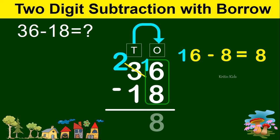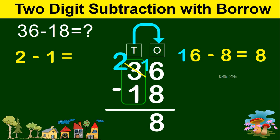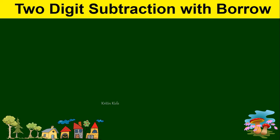We write 8 here. Now at the tens position, 3 has become 2 since we had borrowed 1 from 3 for the ones position subtraction. Now we can say it is 2 minus 1, which equals 1. So 36 minus 18 gives us 18.